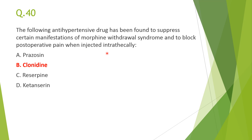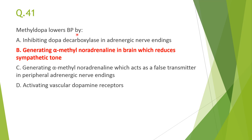Next: the antihypertensive drug that suppresses certain manifestations of morphine withdrawal syndrome and blocks post-operative pain when injected intrathecally — answer B, clonidine. It is useful in morphine withdrawal as well as alcohol withdrawal, and has analgesic actions useful in preventing post-operative pain.